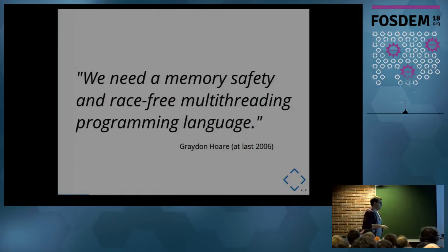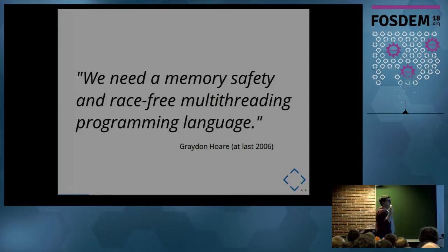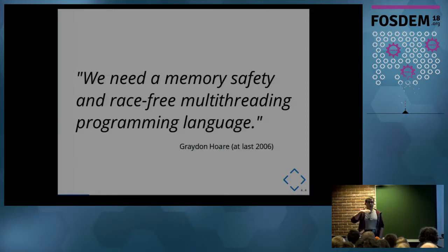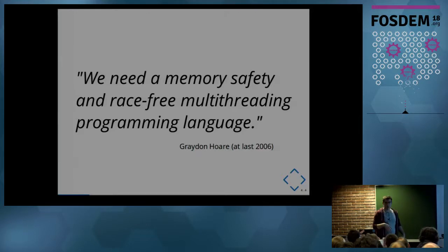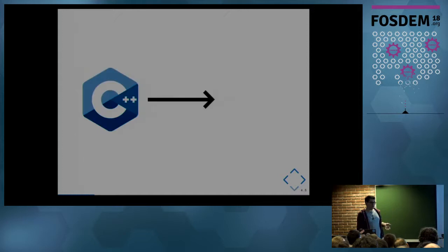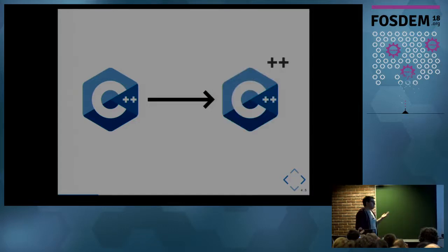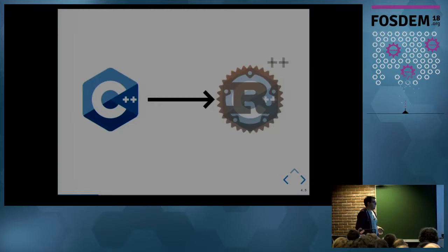Graydon Hoare, a Mozilla engineer, had this idea in 2006: we need a memory-safe and data-race-free multi-threading programming language. Because it was really hard — and still is hard today — to write safe multi-threaded code with C and C++ if you want to obtain high-performance code. With this idea, Graydon Hoare said we need a new C++, and introduced a new programming language — the C++++. And this C++++ is actually Rust.